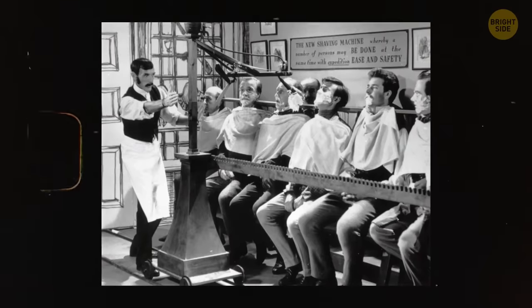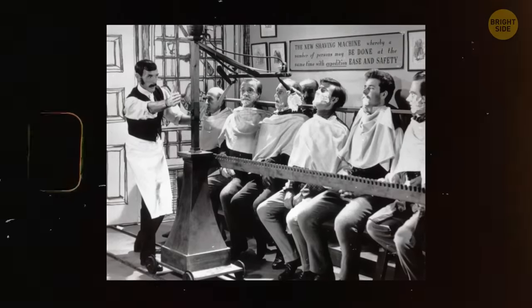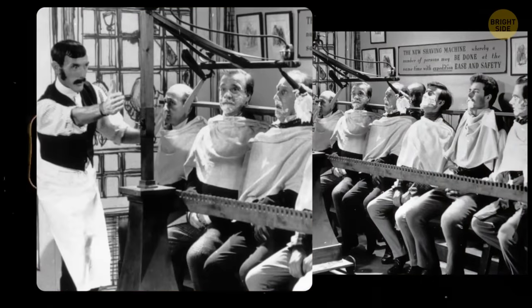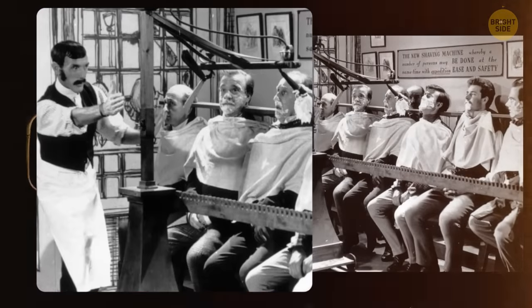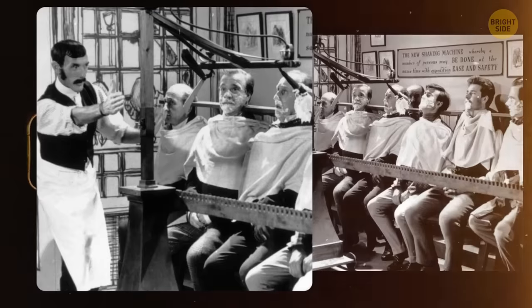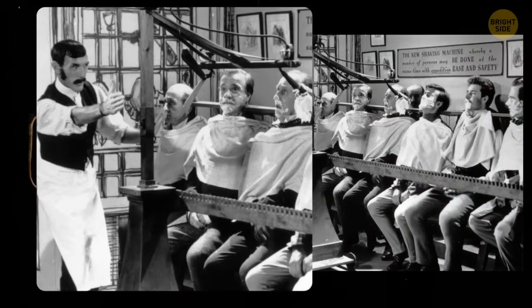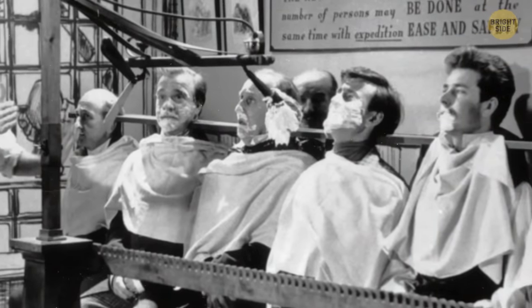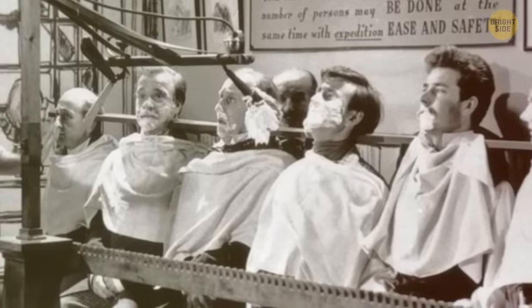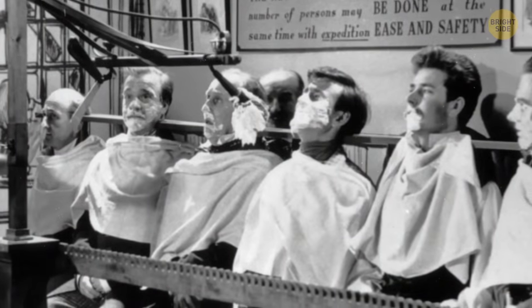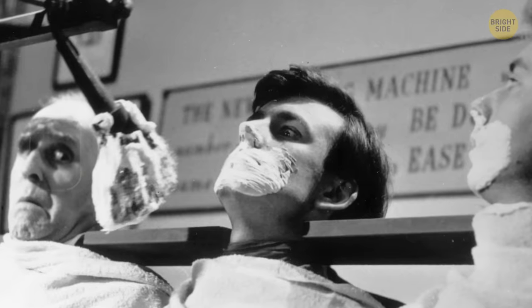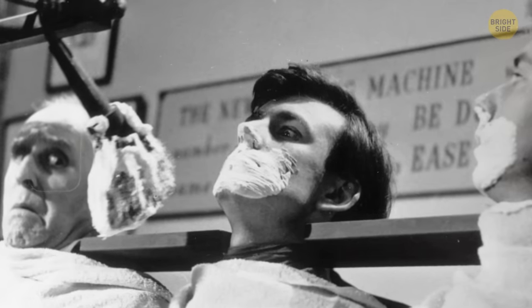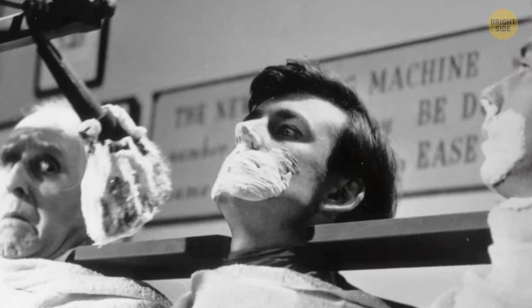Picture this, a row of dudes sitting side by side with the machine applying foam to all their faces at once. Then, a giant blade would come in and trim all their facial hair in one fell swoop. In theory, this bad boy could shave 12 dudes at a time. But, as with most things in life, there were some downsides. The machine couldn't adjust to different face shapes. So, some guys ended up with uneven shaves. And the worst-case scenario? Cuts and abrasions from that giant blade. Ouch!